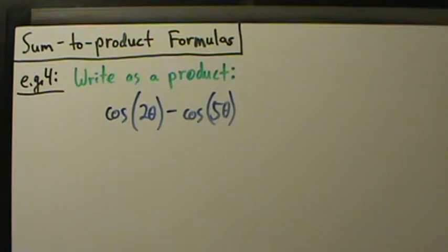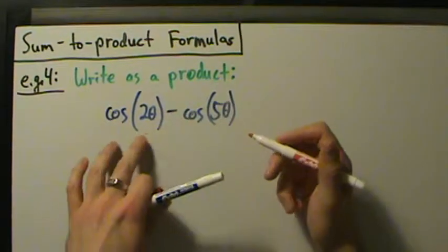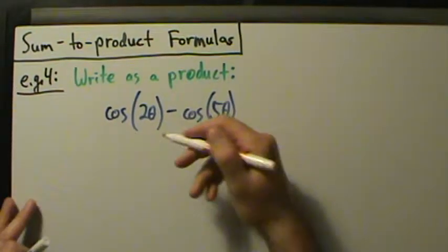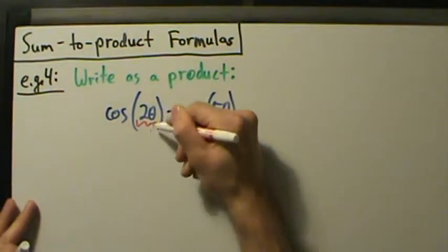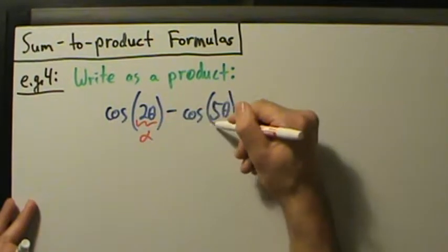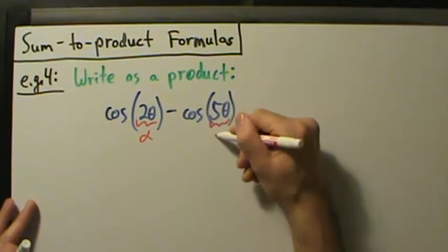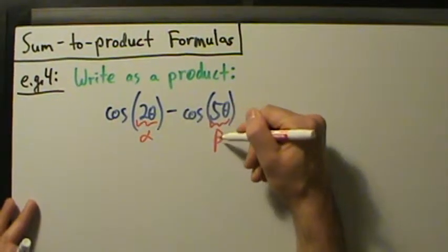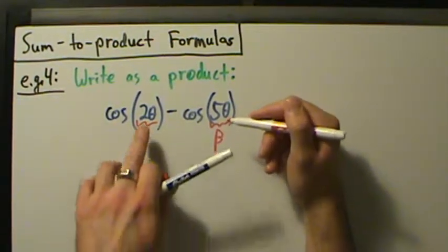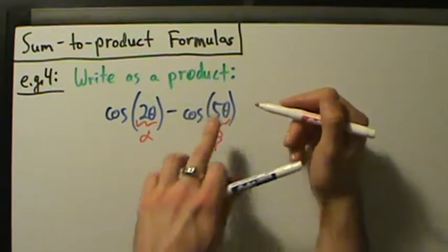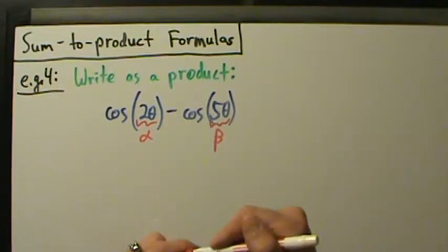Since it's cosine of alpha minus cosine of beta, we identify our variables: two theta is going to be our alpha, and five theta is going to be our beta.